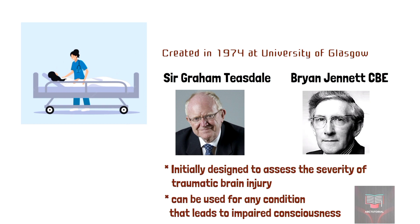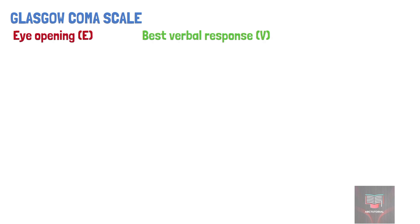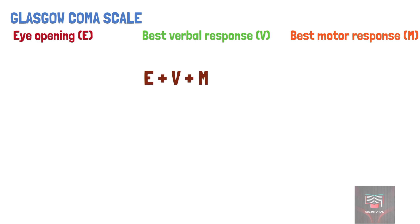The GCS is divided into three categories: eye opening, best verbal response, and best motor response. The score is determined by the sum of the score in each of the three categories, with a maximum score of 15 and a minimum score of 3.